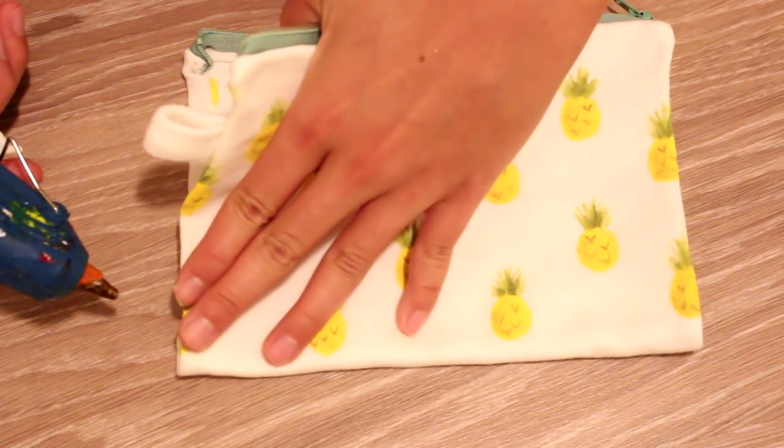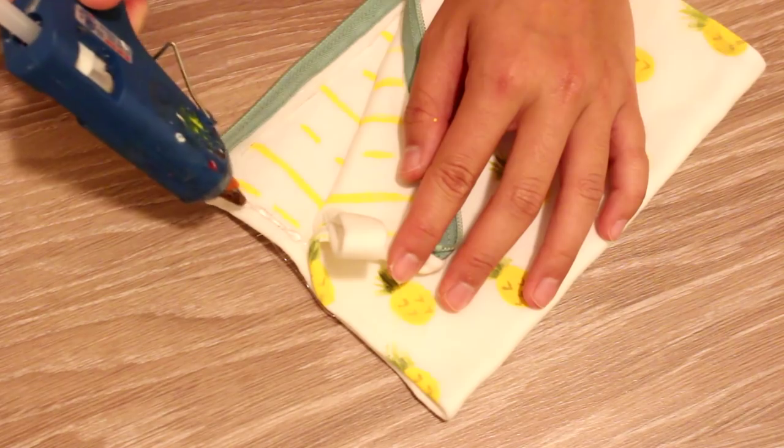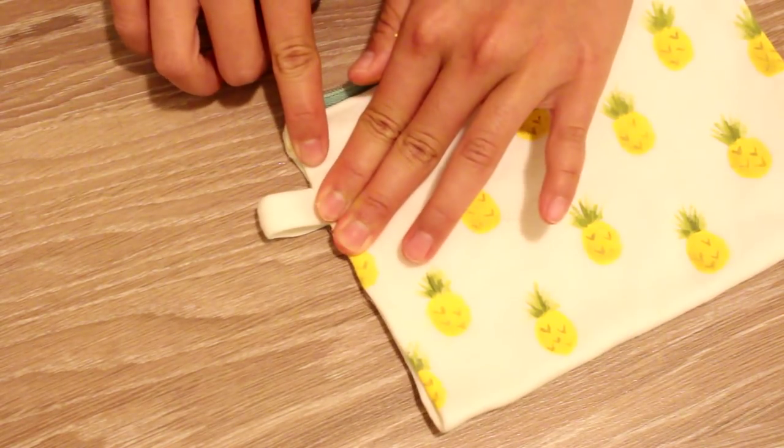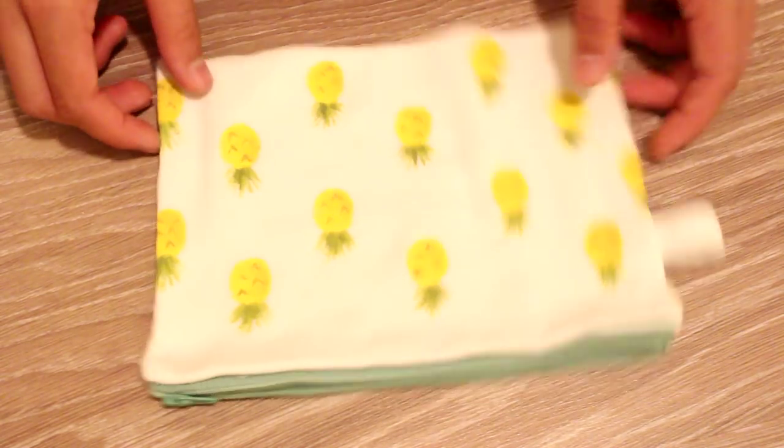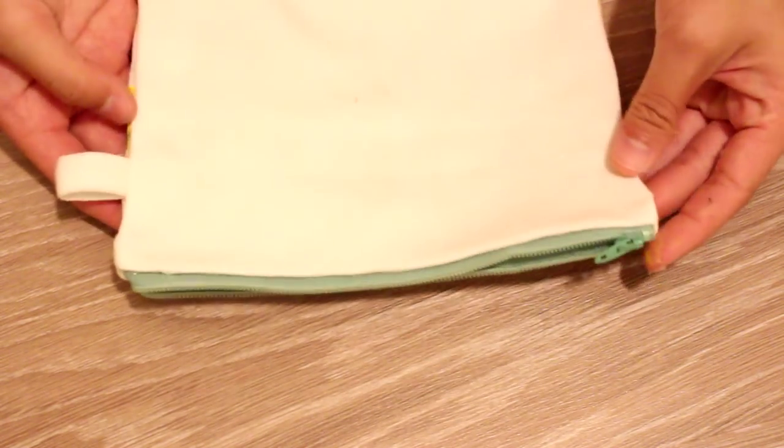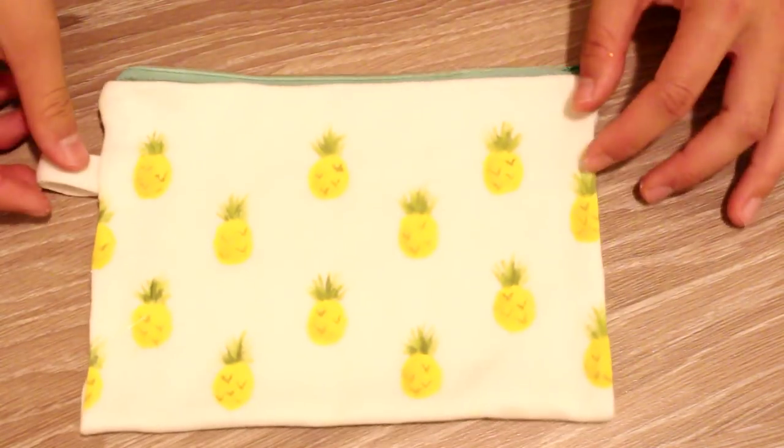To finish up the pencil case, flip it outwards again and glue along the side edges. You can use your fingers to pat it down and secure the glue. Do the same for the other side. And you're done! So now you have a really awesome pineapple case that you can throw all your pencils in and move from class to class. I think that they turned out really cute and they're really customizable to suit your own style.